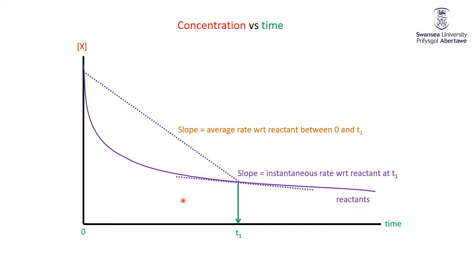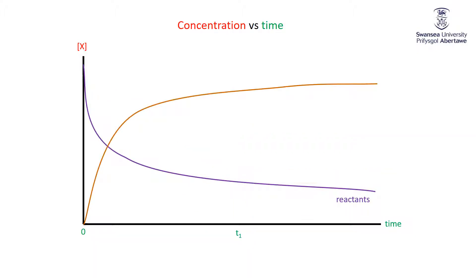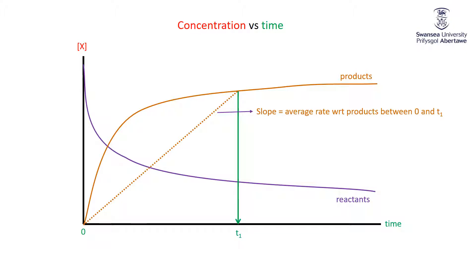The concentration can apply to products as well as reactants. If X is a product, we start off with none of it, then we start making it rather quickly and that slows off in a way symmetrical to the reactants. Again, at time T1 we can take the slope of the line between time zero and T1 — that's the average rate with respect to the products between zero and T1 — or we can do the instantaneous rate with respect to the product at T1.